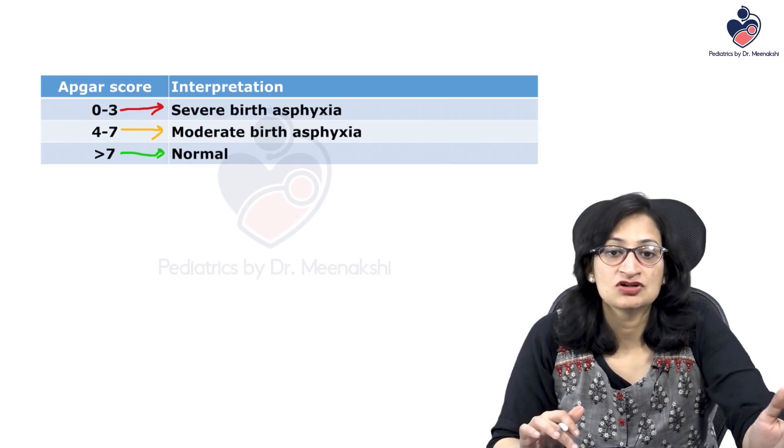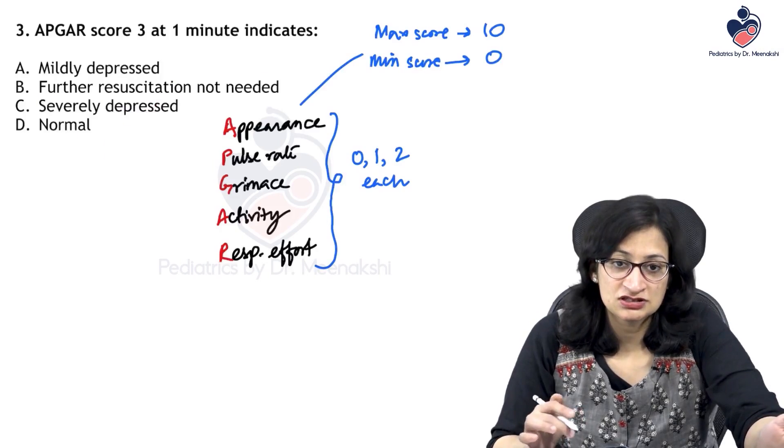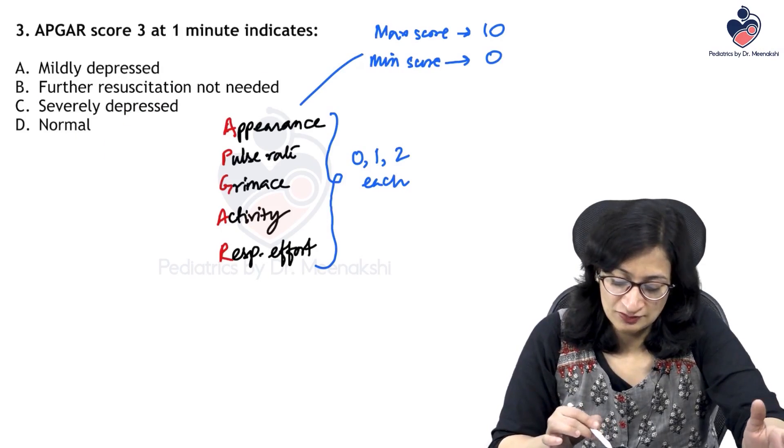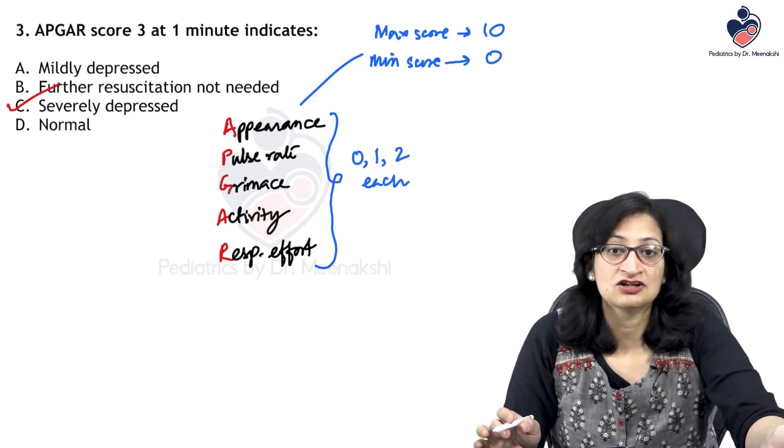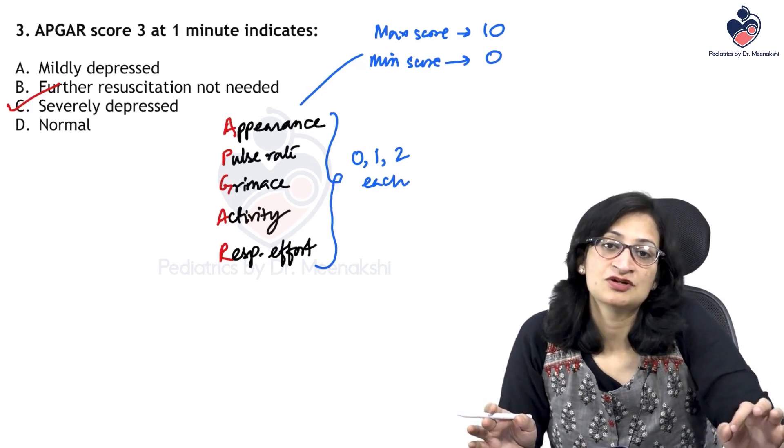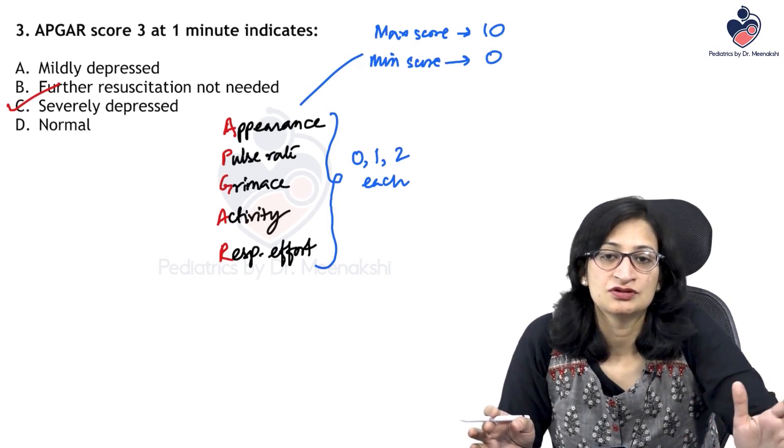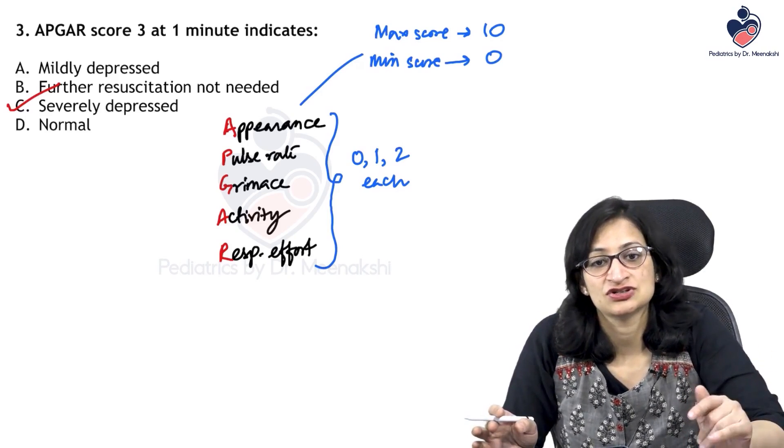So here the question says APGAR score of 3, so it will indicate severe birth asphyxia. That means a severely depressed baby. So here we are not discussing the psychiatry viral depression. It is severely depressed baby means a baby with severe birth asphyxia or perinatal asphyxia.